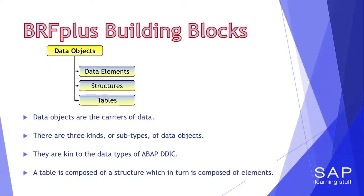Next on the menu, we have data objects. If expression objects are the carriers of business logic, data objects are carriers of data. They function just like variables in a program — they keep the data after it gets manipulated and make it ready for further manipulation. They are also used to define the typing of both the input and output of the function object. Data objects come in three flavors: data elements, structures, and tables. Those subtypes are linked directly to the corresponding entities of the well-known ABAP data dictionary.